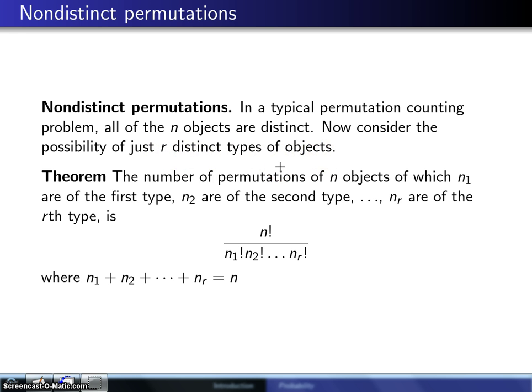So here is the theorem that's associated with nondistinct permutations. The number of permutations of n objects, of which n1 are of the first type, n2 are of the second type, all the way up to n sub r of the rth type,